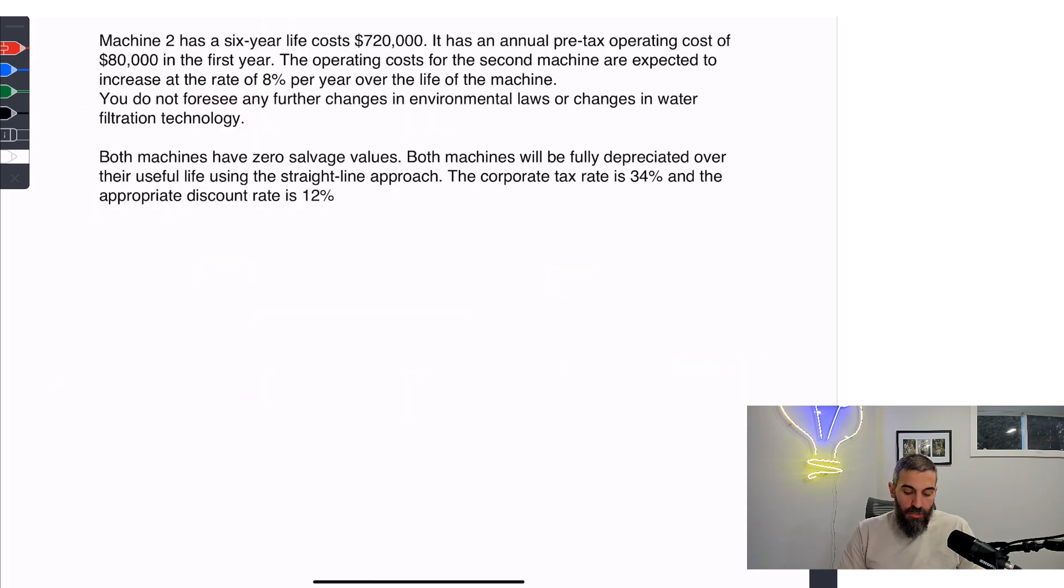Now for machine number two, we're going to repeat the exact same process. First, we'll start by finding the after-tax operating costs. We'll take the $80,000, multiply that by one minus the tax rate. So that is $52,800. And since this is growing at a rate of 8%, we're also going to use a growing annuity formula.